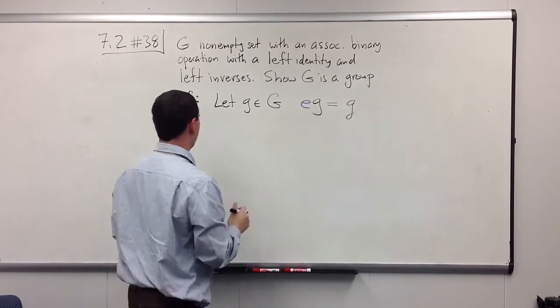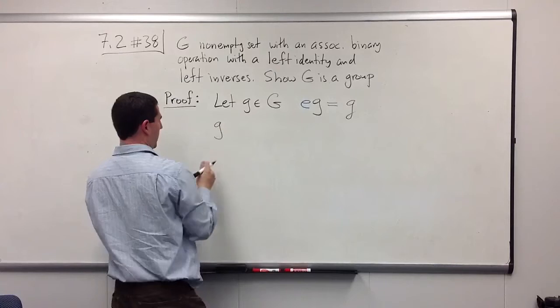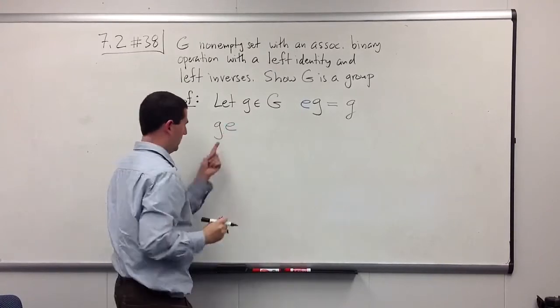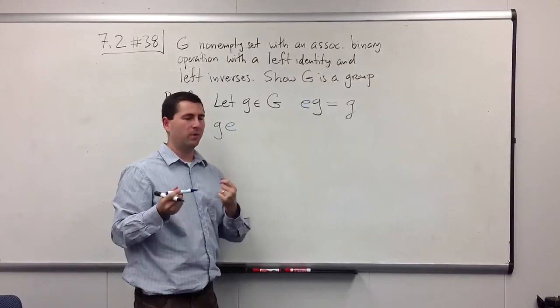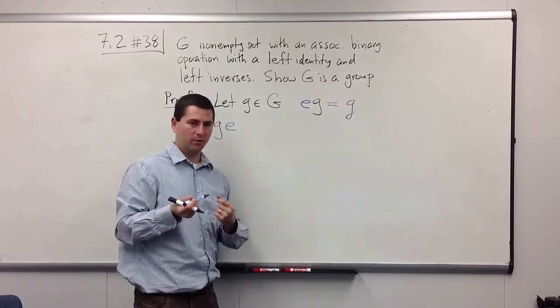But we want it the other way around. We want to know what happens when you multiply g on the right by e. Do we still get back g? All right, so we're going to play a little game here, a little trick.